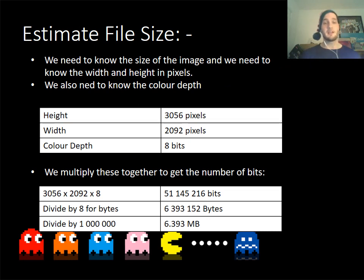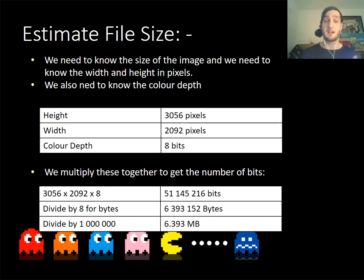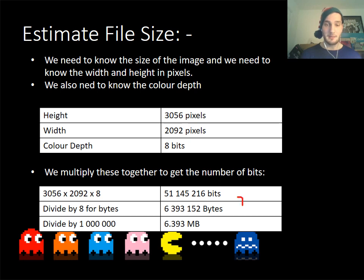Estimating the file size can be quite difficult. To get the file size, you can do height times width times color depth - that will give you the number of pixels. Once you've worked out the bits, if you want to convert to bytes, remember we have 8 bits to a byte, so divide by 8. Then to get it into megabytes, divide by 1 million. If you needed to make it even smaller again, you would divide again - that is how you estimate the file size in megabytes.